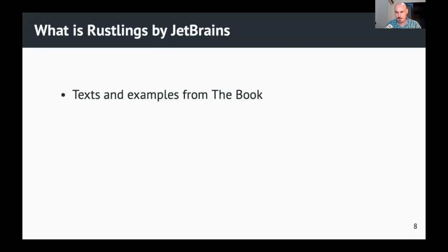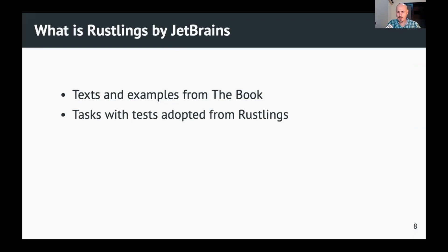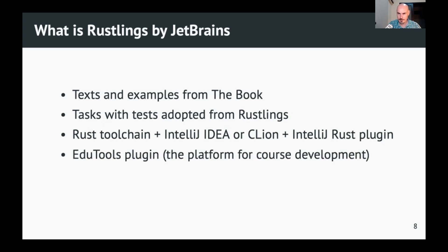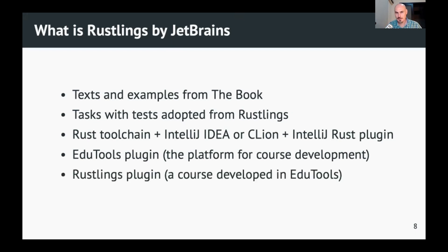So this is a tool for reading, looking at examples, and actually writing programs — all in just one window. What is this Rust Links by JetBrains adaptation? We take texts and examples from the book, and we take problems from the original Rustlings course. Then you add the usual Rust toolchain. You should take any JetBrains IDE — PyCharm, CLion, IntelliJ IDEA — and then you have the IntelliJ Rust plugin. Once you have all that, you need the educational platform, which comes as a plugin, and Rustlings is a course developed using this platform.